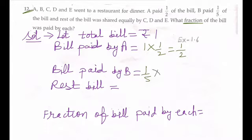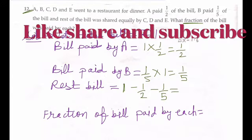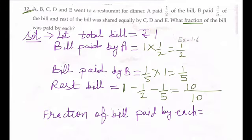Rest of the bill - total one tha, one mein se half jo hai wo A ne pay kiya, one-fifth jo hai wo B ne pay kiya. LCM here, in this case it is 10. So it will be 10 minus 1 multiplied by 5, that is 10, minus 1 multiplied by 2, that is 10.